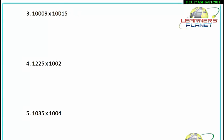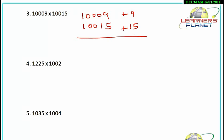Now in this case it is 1009 into 10,015. Write it down: 1009 and 10,015. It's plus 9 from 10,000 and plus 15 from 10,000. There are four zeros in 10,000, so this multiplication must fill up four digits. 15 into 9 is 135, so we put one zero there to make four digits. The remaining calculation is 1009 plus 15, which is 1024. The calculation is very simple.